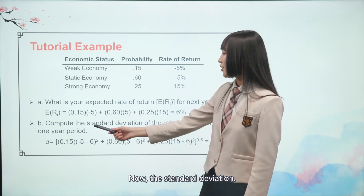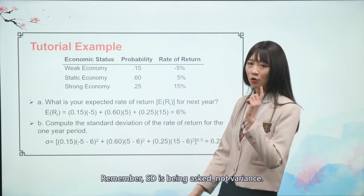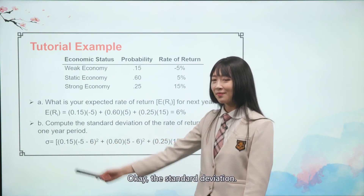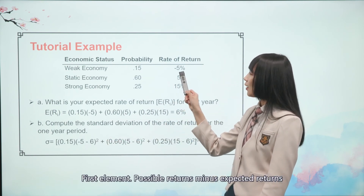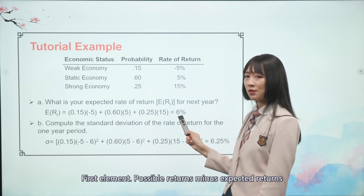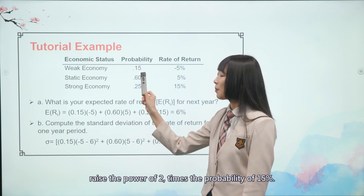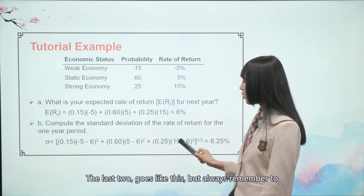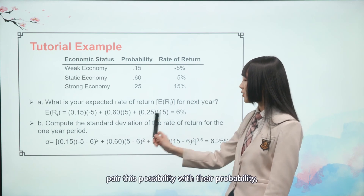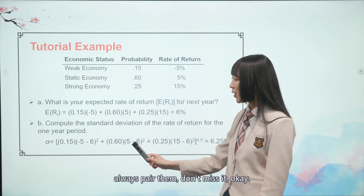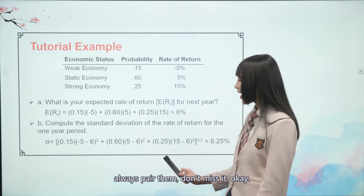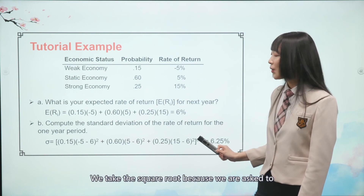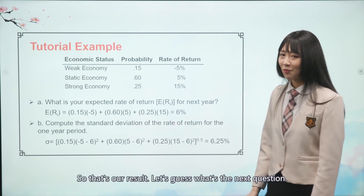Now for the standard deviation. Remember, SD is being asked, not variance. The first element: possible return minus expected return, raised to the power of 2, multiplied by the probability of 15%. That's our first element. The last two go the same way. Always remember to pair each possible return with its correct probability. Then we add these squares together and take the square root, because we are asked for the standard deviation. That gives us our result.